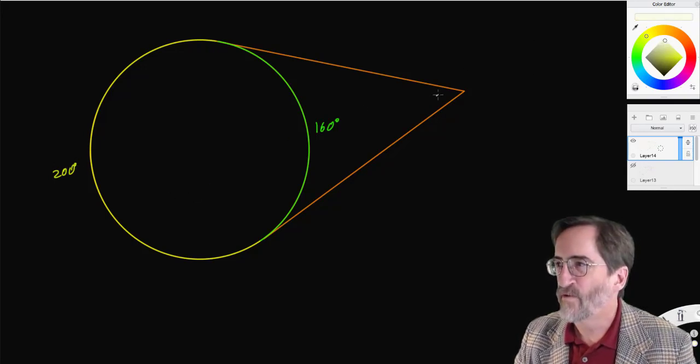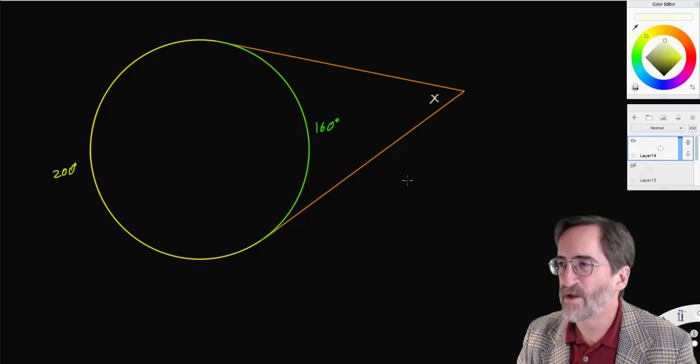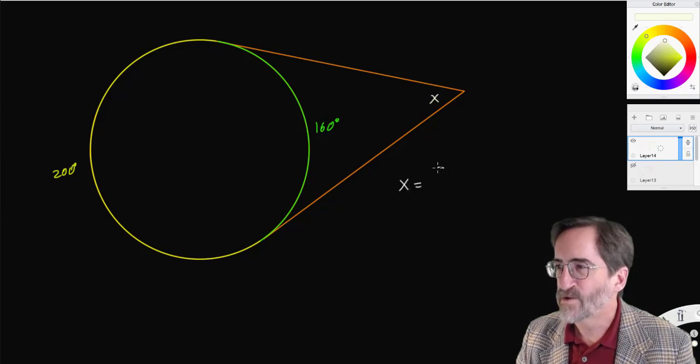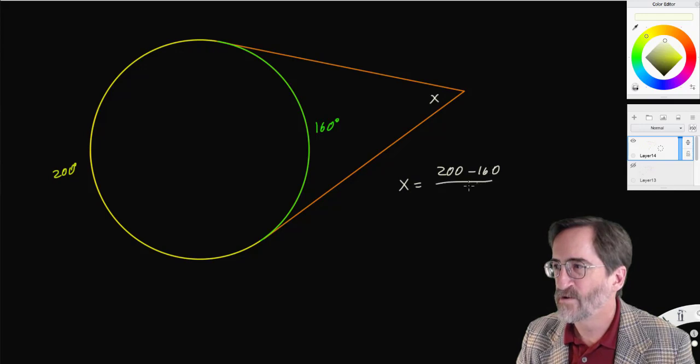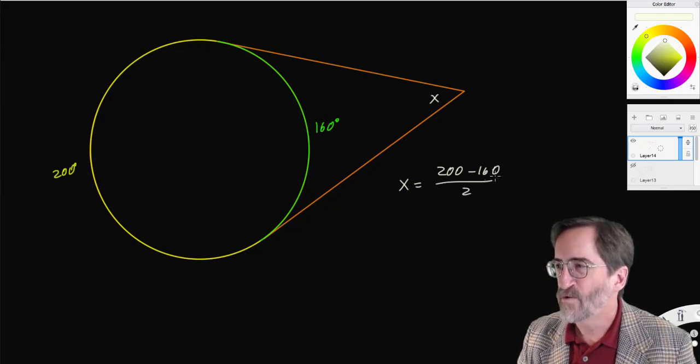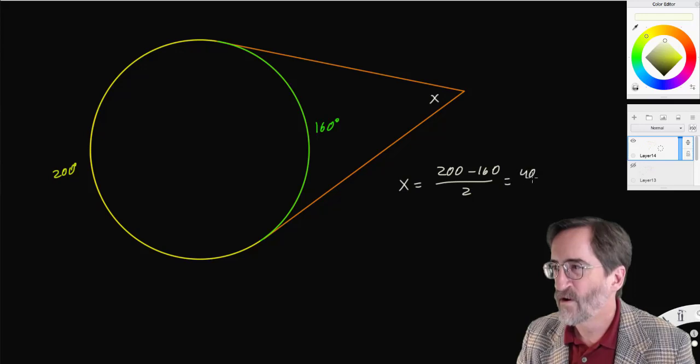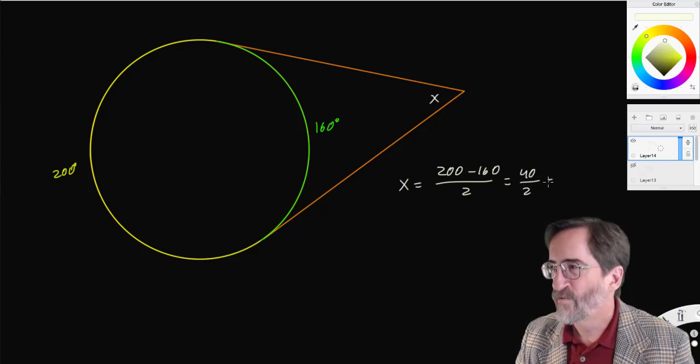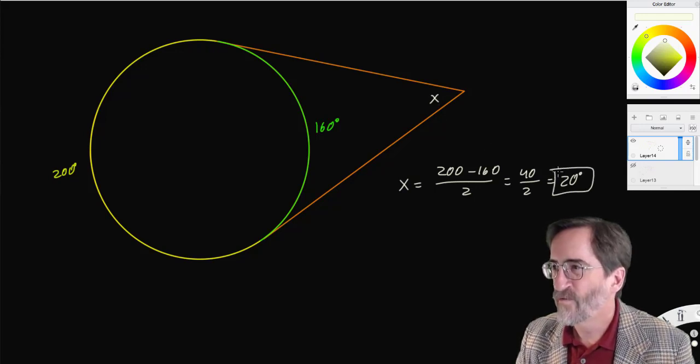And if I want to find this, I do the same thing. X is 200 minus 160 divided by 2. 200 minus 160 is 40. 40 divided by 2 is 20 degrees.